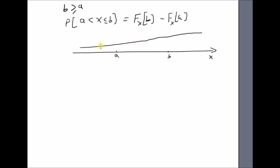which is a non-decreasing function, and we want to verify that the probability of this interval — that is between a and b — should be equal to the difference between F(x) of b and F(x) of a.